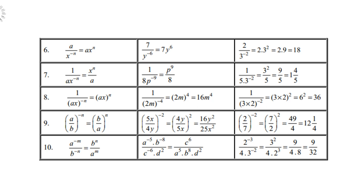Definition 8: 1 over ax to the power negative n — both a and x are under the influence of the negative n, so both go up to the numerator. For example, 1 over 2m to the power negative 4: both go up, becoming 2m to the power positive 4, which is 16m to the power 4 — note it is 16, not 8. And 1 over 3 times 2 to the power negative 2: both go up, giving 6 squared, which is 36.